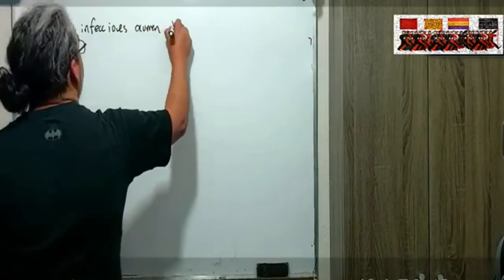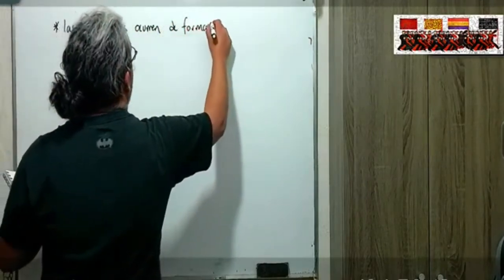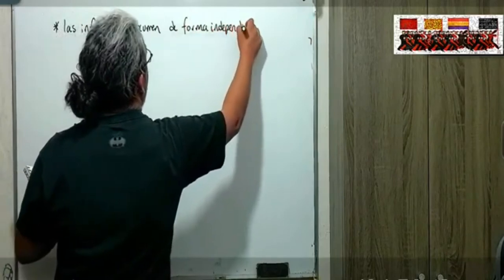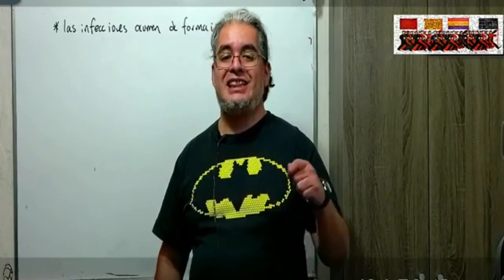Independiente en términos probabilistas: la probabilidad de la intersección va a ser exactamente el producto de probabilidades. Esa es una suposición bien fuerte, porque no necesariamente es cierta y es altamente dependiente de la topología de la red. Hay que tener mucho cuidado con eso.